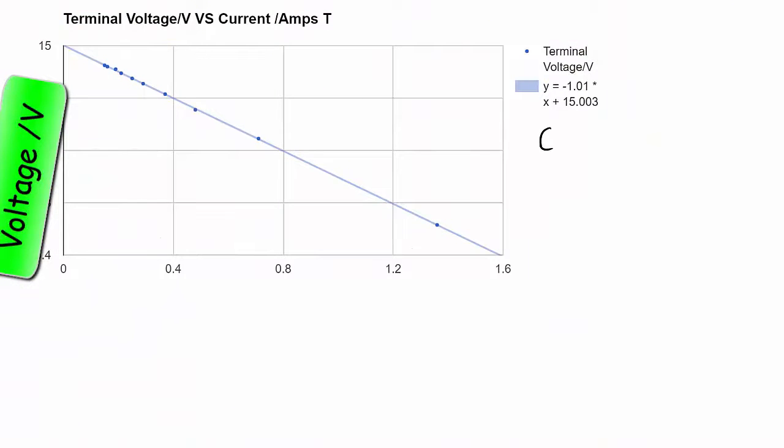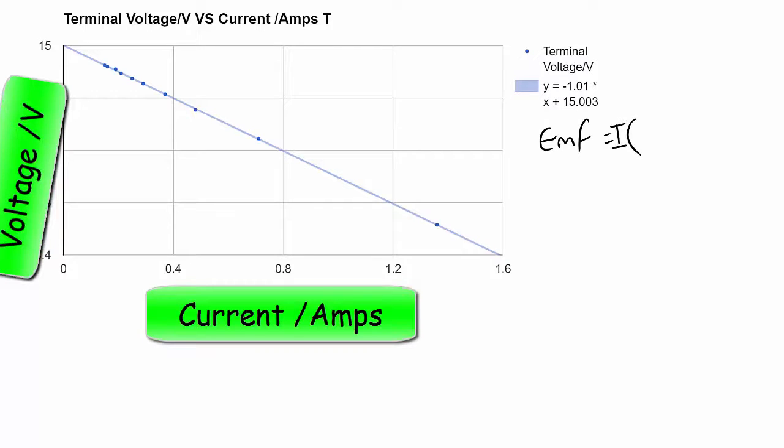So finally we have plotted a graph. We have voltage on the y-axis and current on the x-axis. So if we compare that to the formula we had for EMF, which was EMF equals I times internal resistance plus the external resistance.